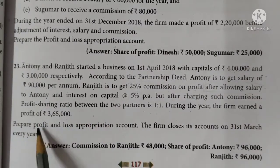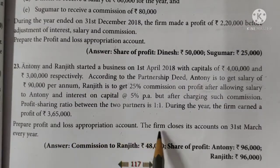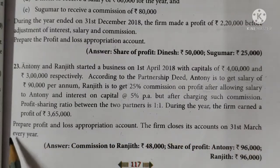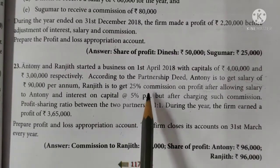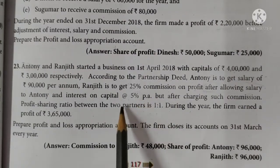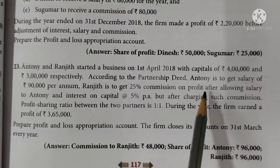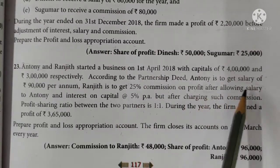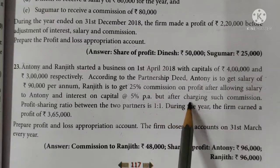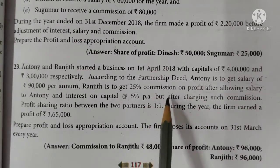Prepare the Profit and Loss Appropriation Account. The firm closes its accounts on 31st March every year. The key conditions involve salary, commission on percentage, profit after allowing salary, and but after charging such commission — so we need to decide how to follow the correct order.